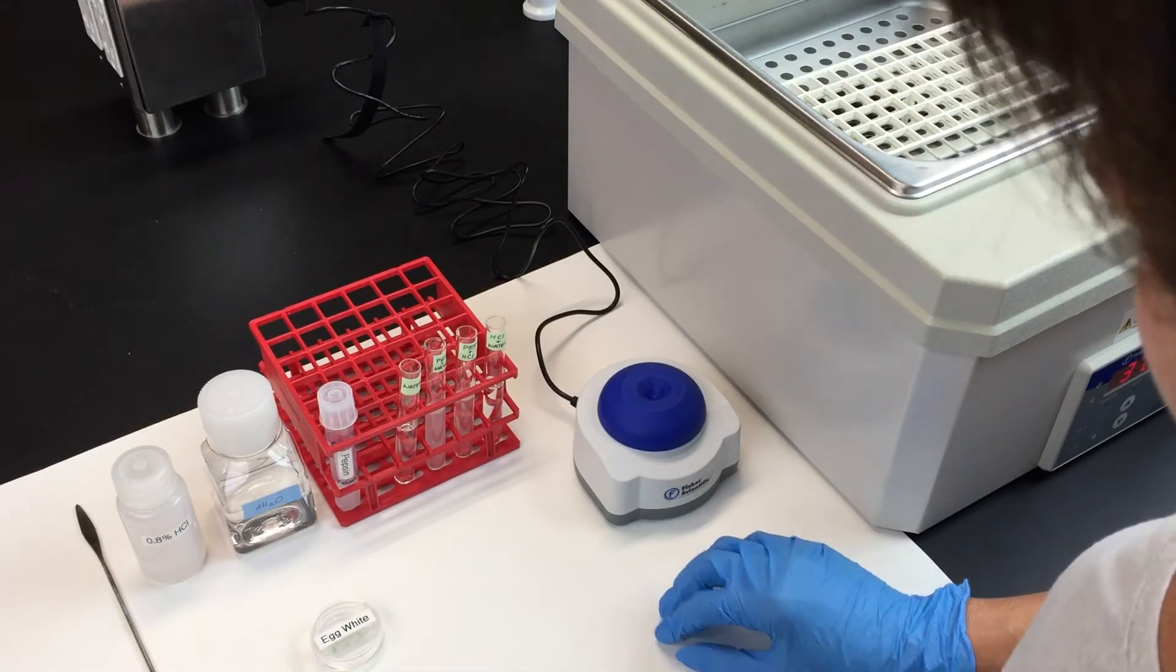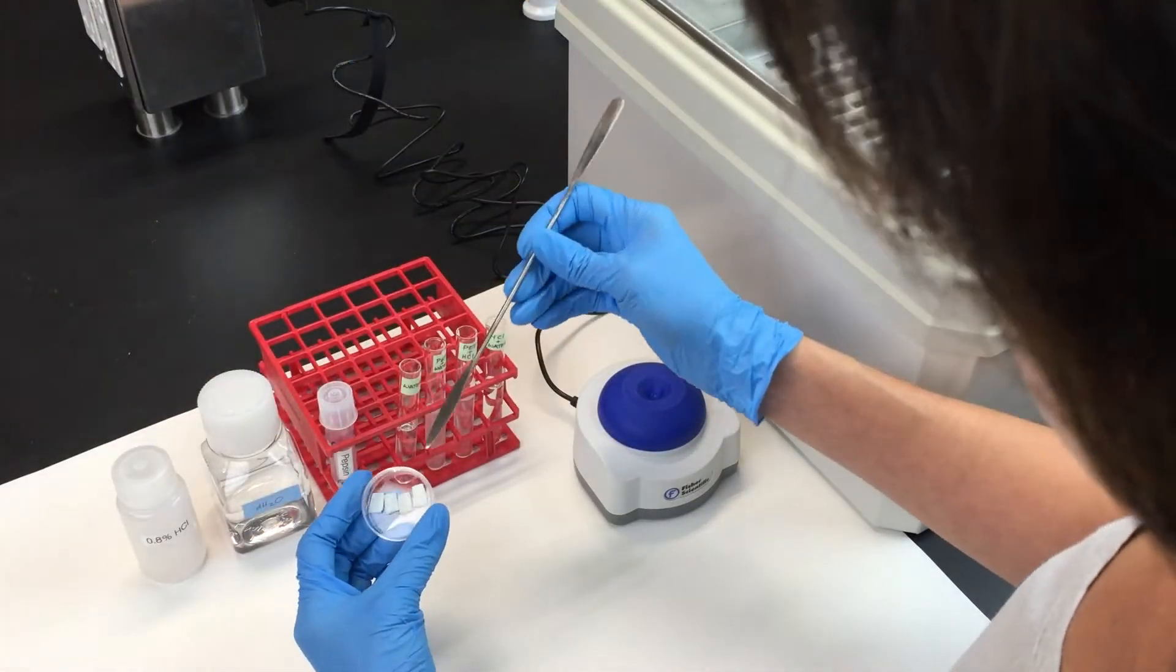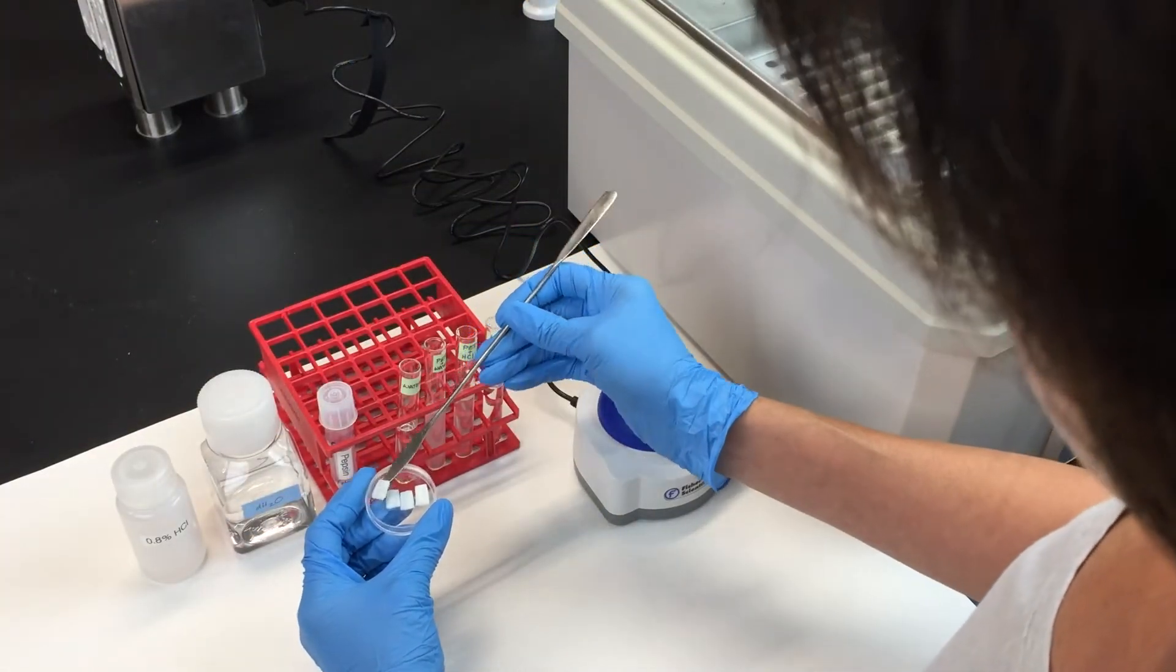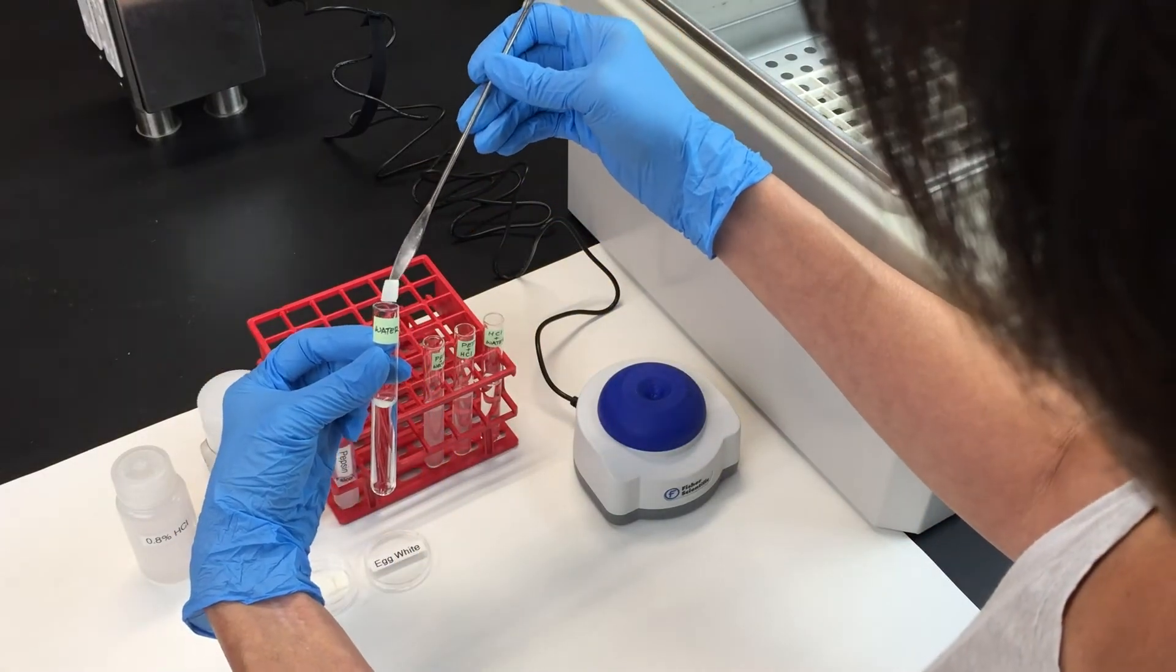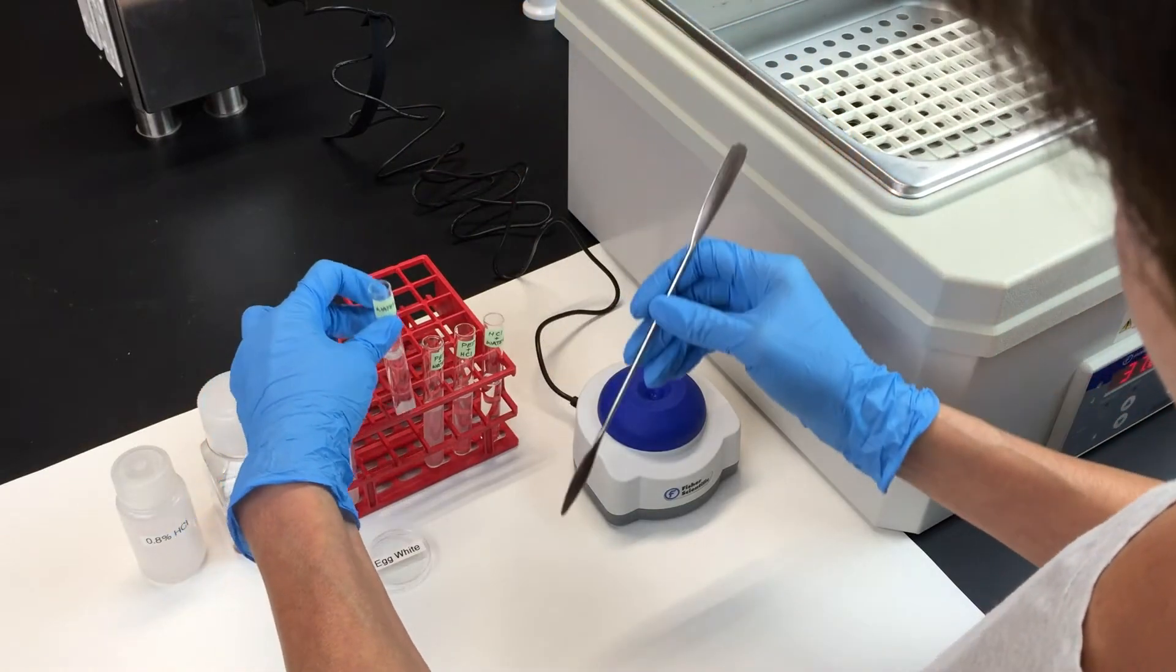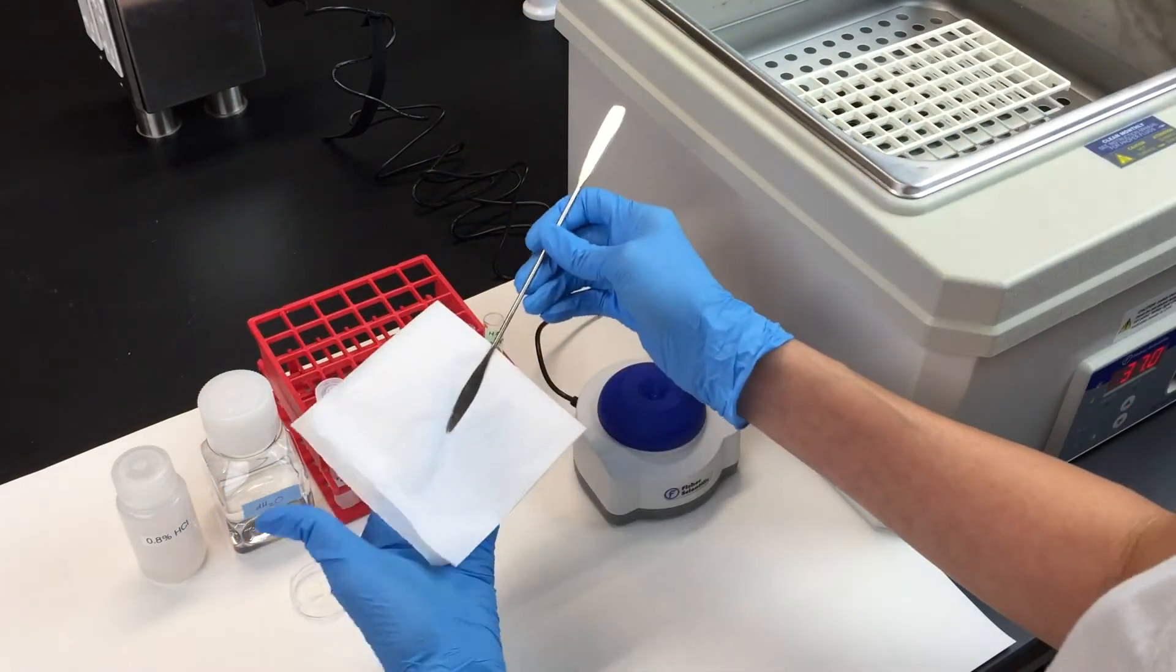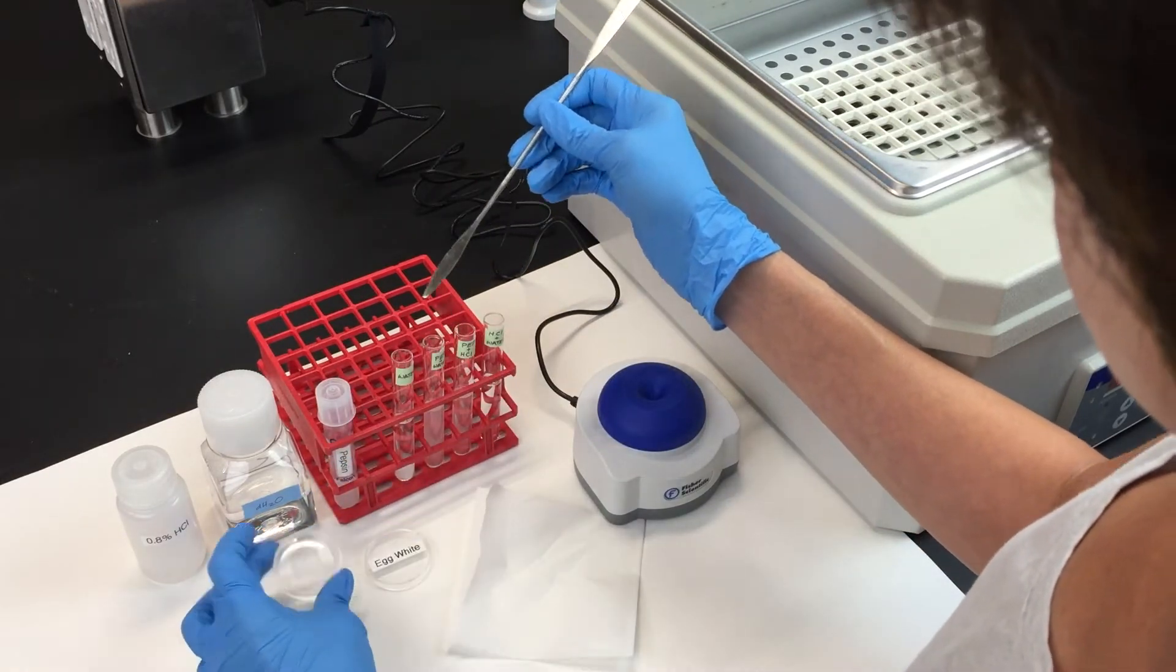Using the spatula provided, carefully add a slice of egg white to each tube. Make sure that the egg white is fully submerged in the solution. You should also wipe off the spatula in between tubes so that you don't contaminate the tubes.